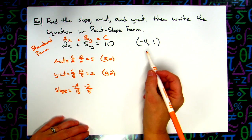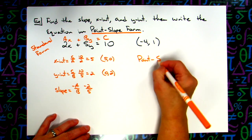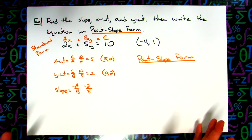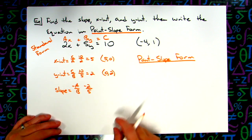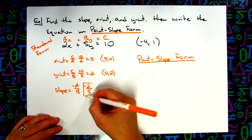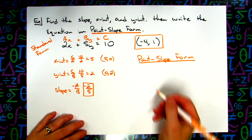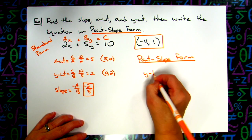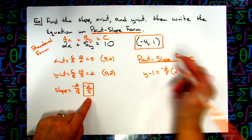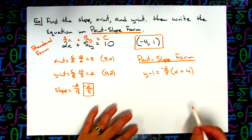Now for point-slope form: technically you can use any point — (5,0), (0,2), or the given point (-4, 1). Since they gave you (-4, 1), they're indicating they want you to use that. With slope negative two-fifths and the point (-4, 1): y minus 1 equals negative two-fifths times (x minus negative 4), which is x plus 4.